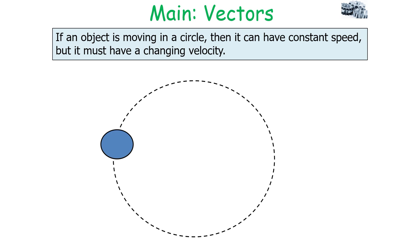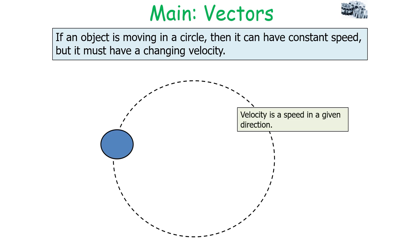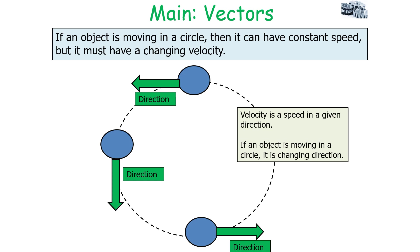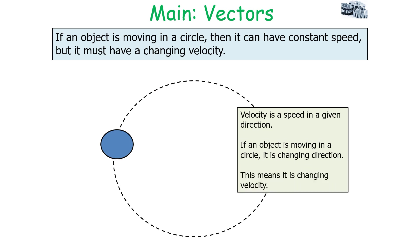If an object is moving in a circle, it can have a constant speed but must have a changing velocity, because velocity is speed in a given direction. Moving in a circle means continuously changing direction, which means changing velocity — so the object is accelerating.